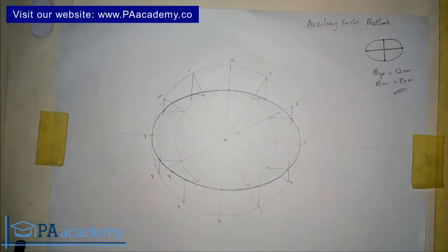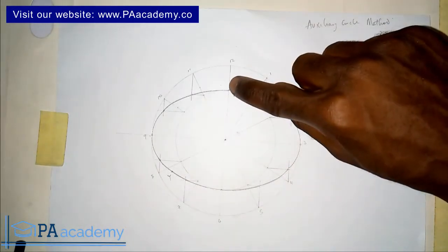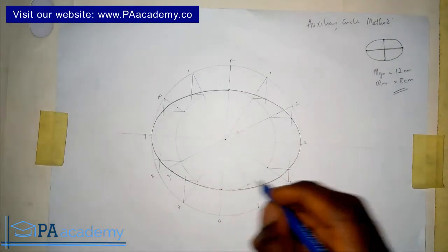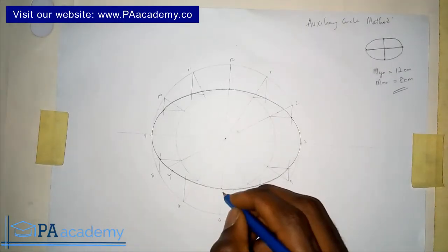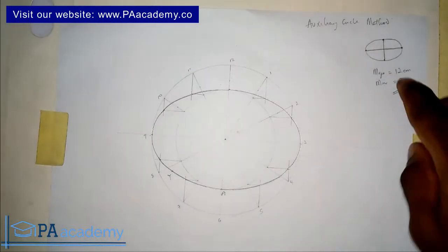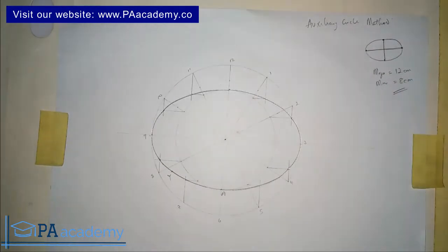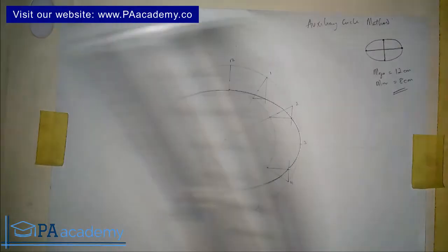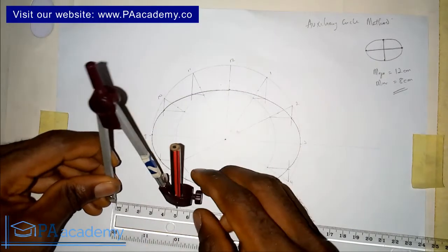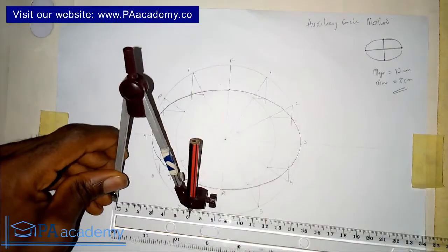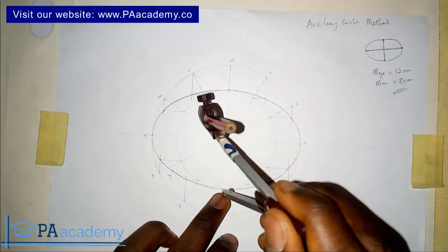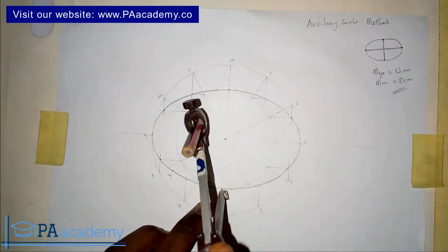Now we are going to draw an arc from this point — let's call it point A. From point A we are going to draw an arc with a length equal to half of the major axis. The major axis is 12 centimeters, so we draw an arc with a radius of 6 centimeters. I'll measure 6 centimeters with my compass and place it on point A, then draw the arc.